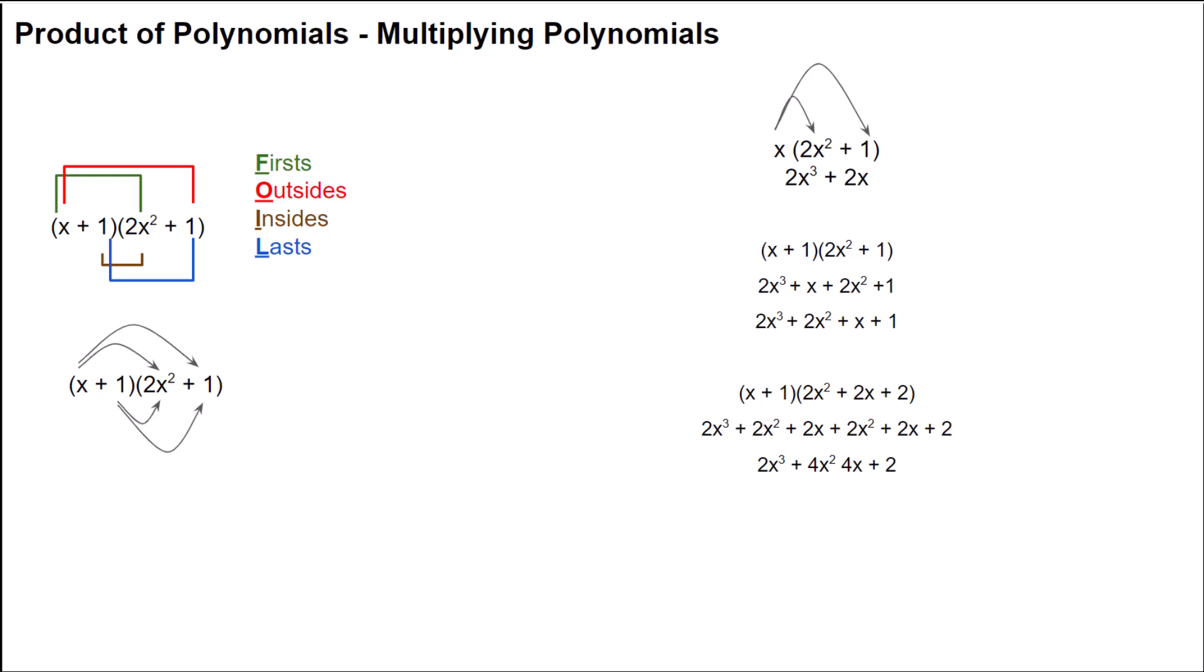I've color-coded the terms here. First means you multiply the first two terms of each polynomial together. In this case, you'd multiply x times 2x², followed by the outside terms, x times 1. Then you multiply the inside terms, 1 times 2x². Finally, you multiply the last terms, 1 times 1. This is an okay method, but it works best when you're multiplying two polynomials that have two terms. If you notice what I've done here below,